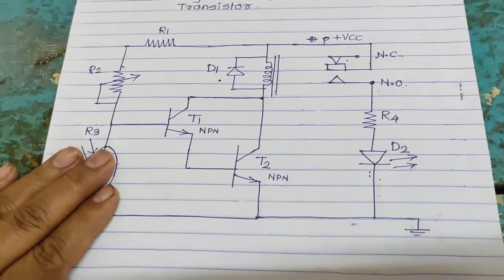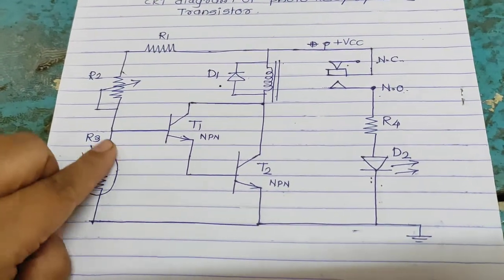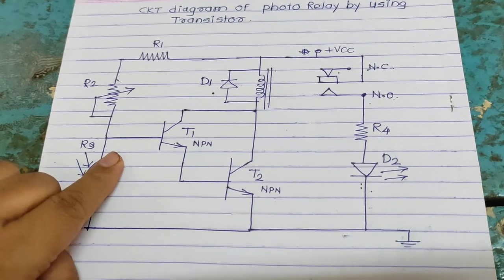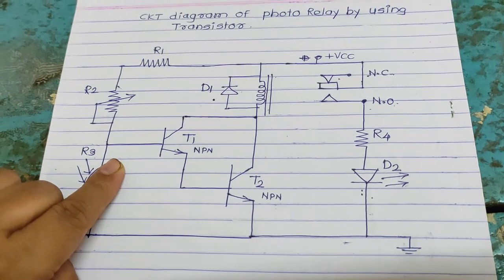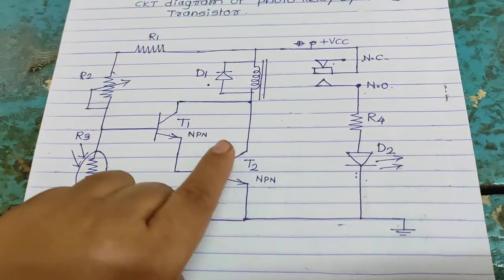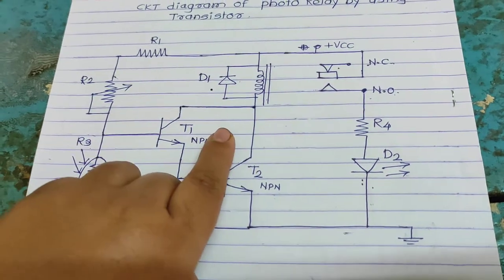Second condition, LDR is in dark condition. That time voltage across LDR is very high. T1 biased. That time T1 is on. T2 also on. Current through relay coil. Then relay also on.